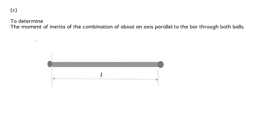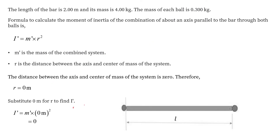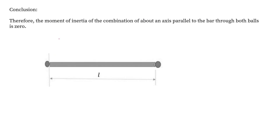Now let's find the moment of inertia of the combination about an axis parallel to the bar but passing through both balls. The axis parallel to the bar passing through both balls is only one axis, as shown. Since the moment of inertia depends directly on the distance of the mass from the axis, and here that distance is 0, the moment of inertia in this condition is 0.